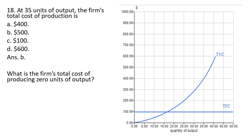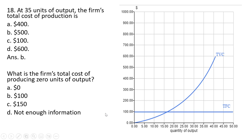What is the firm's total cost of producing zero units of output? At zero units of output, total variable cost is zero and total fixed cost is $100, so total cost will also equal $100 — zero plus $100. Answer choice B.